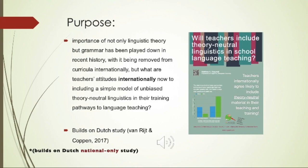The context of this is that the importance of not only linguistic theory but grammar has been played down in recent history, with it being removed from curricula internationally. But what are teachers' attitudes internationally now to including a simple model of unbiased, theory-neutral linguistics in their training pathways to language teaching? This builds on a Dutch study, however this measures the intentions of teachers internationally.